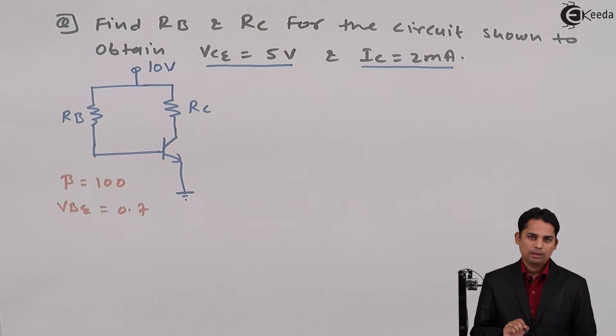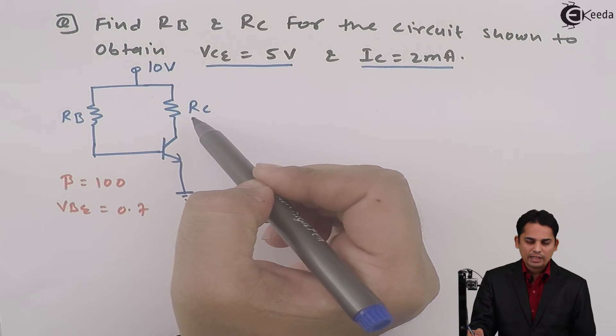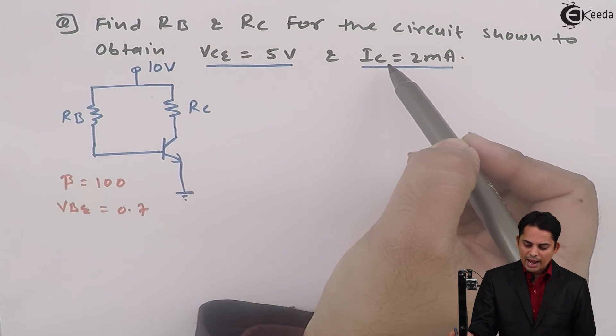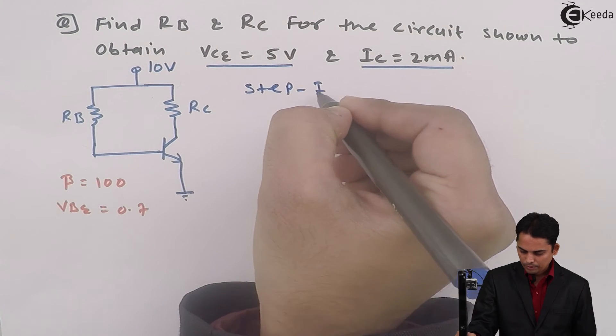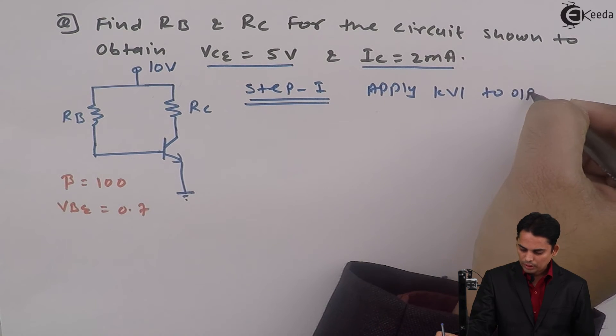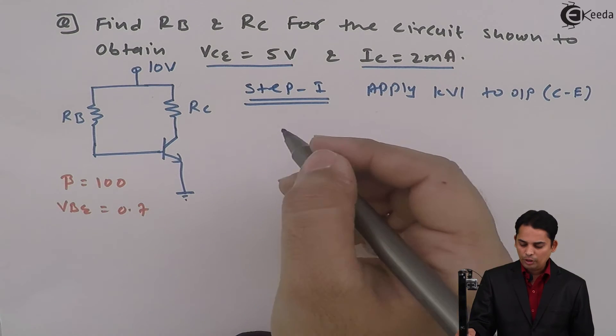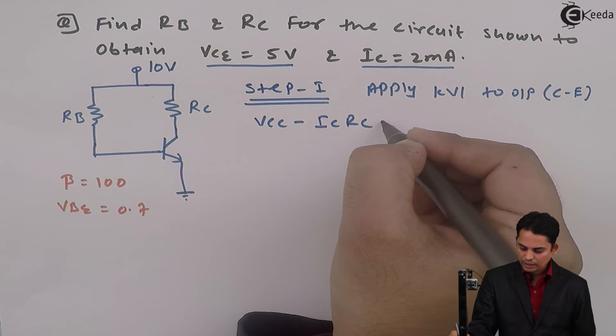Hence, I'll apply KVL to the output loop first. The equation will become VCC - IC·RC - VCE = 0, in which the values of VCE and IC are already known, so we can easily get the value of RC. Step one is to apply KVL to the output, which means collector to emitter.